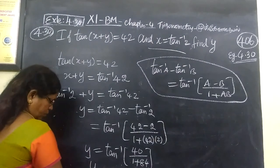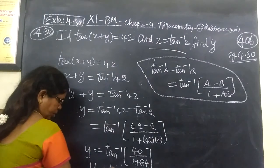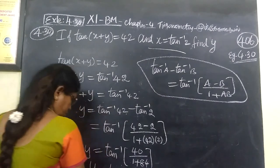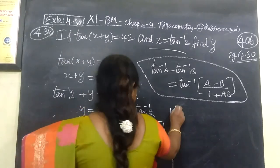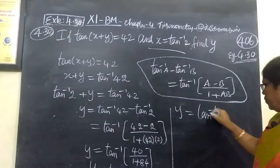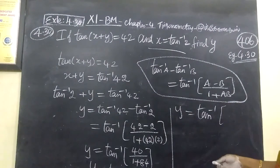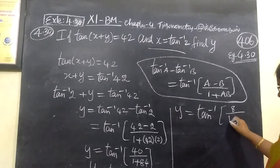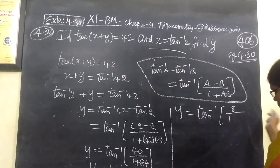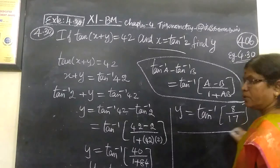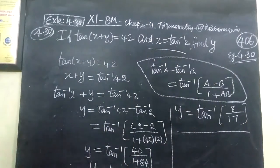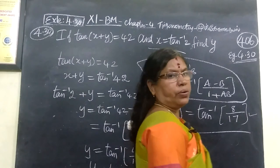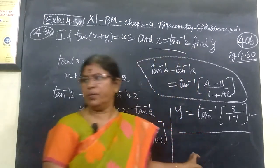So y = tan⁻¹(40/85). Simplifying 40/85, dividing by 5, we get tan⁻¹(8/17). So the answer is y = tan⁻¹(8/17). This is the correct answer. Thank you, and we will see the next one.